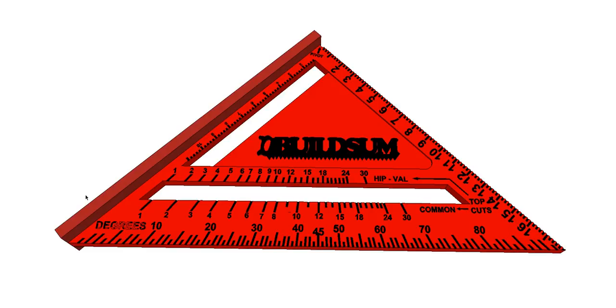So obviously here's a speed square. This is a metric version, so down this side of the square it has metric increments. You can get them with inches, but depending on what you're using, that's commonly the one you need.